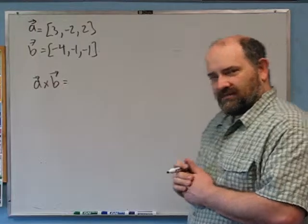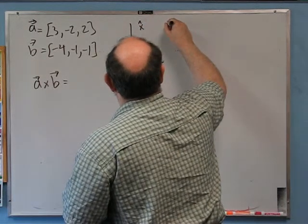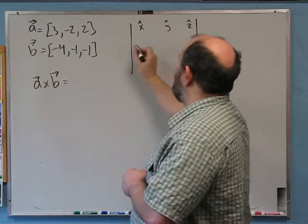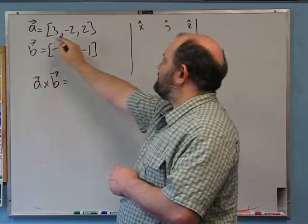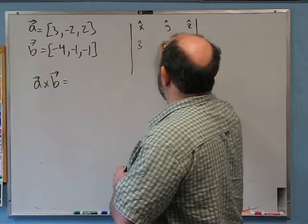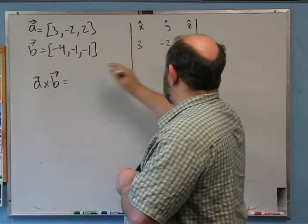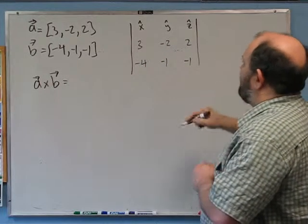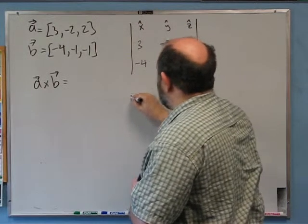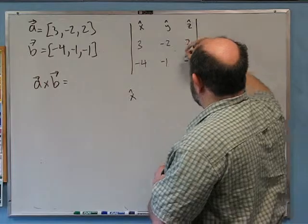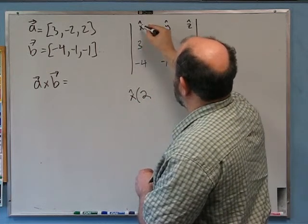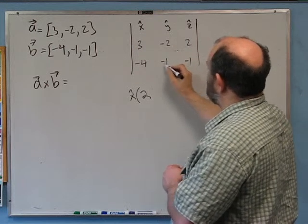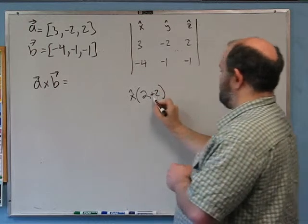I have a way of remembering the formula: draw a little matrix with x-hat, y-hat, z-hat in the first row, then the components of the first vector (3, -2, +2) in the second row, and the second vector (-4, -1, -1) in the third. For x-hat, go down to the right: (-2)×(-1) = +2, then subtract going down to the left — wrapping around — 2×(-1) gives minus negative 2, so another +2.